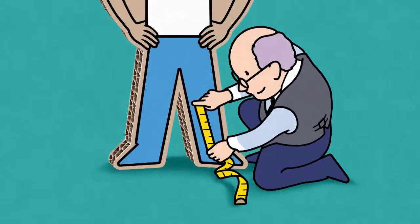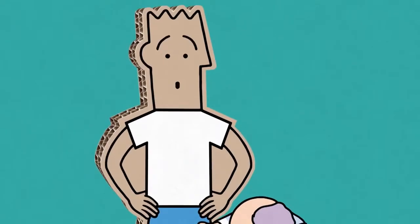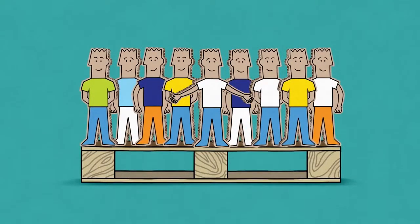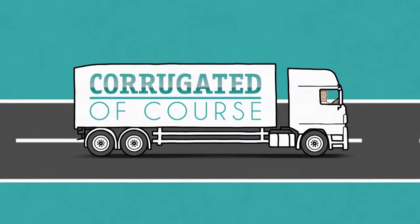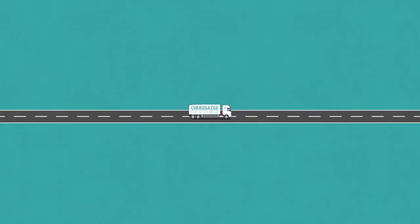The beauty of corrugated is that it can be precisely tailored to fit any product. This means more products on a pallet and better use of warehouse space. All this adds up to less lorries on the road and lower logistics costs.